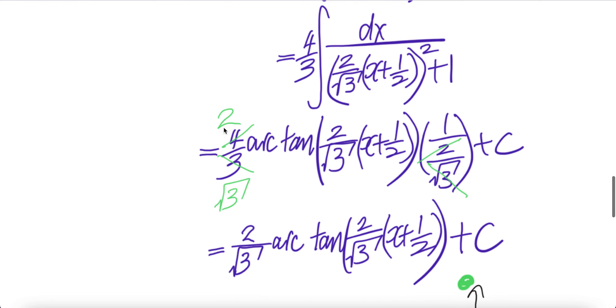Two and this cancel, you get two left. Square root three and three cancel, you get square root three left. You get two over square root three arc tangent of whatever the thing here plus c. Done.